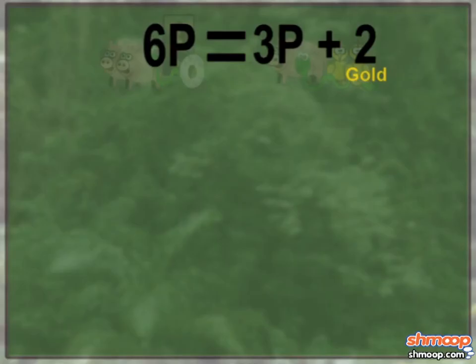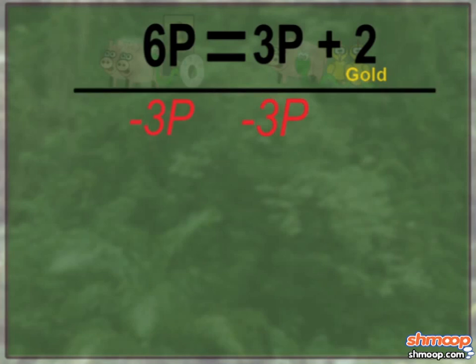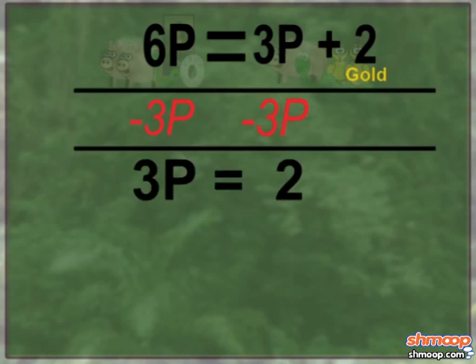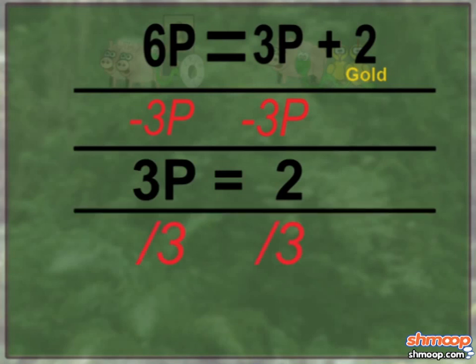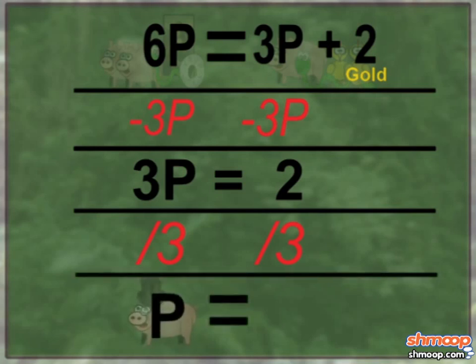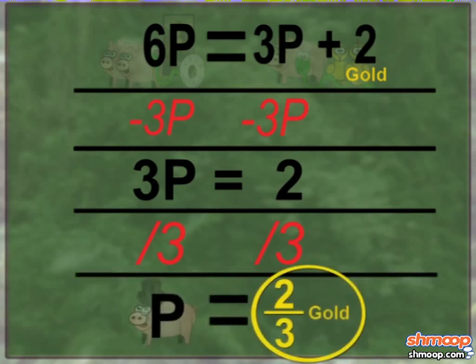First, whack all the P's to one side. You can do this by subtracting three P from both sides. This gives us three P equals two. Now, to get P on its own, divide each side by three. And there you have it, Homo sapiens — the price of a pig equals two-thirds gold.